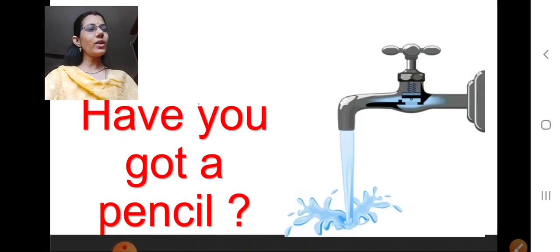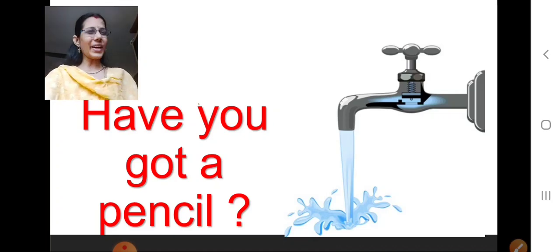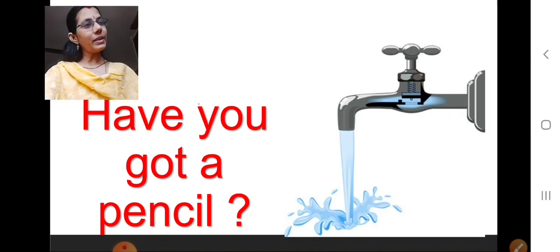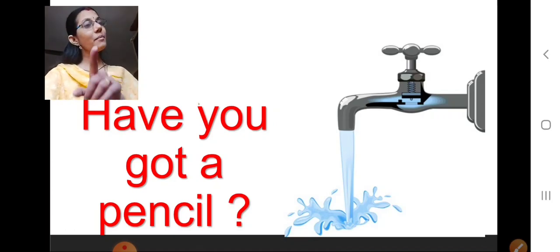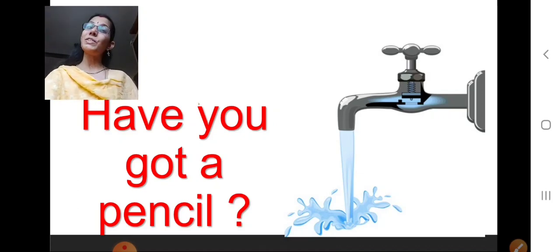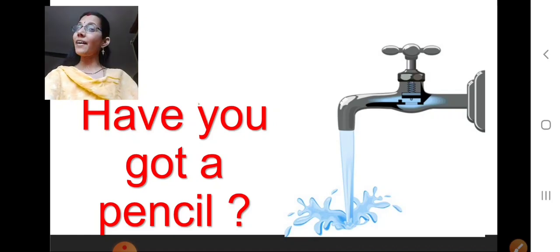I will show you one more. What is this? Picture of a tap and water. Okay. If I ask you, have you got a pencil? What will you say? No, I have not. Because the picture shows tap and water, and I am asking you have you got a pencil — both are not the same. So how should we say? No, I have not. Very good. I haven't. Both are the same.